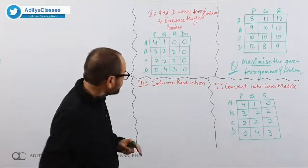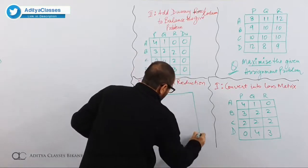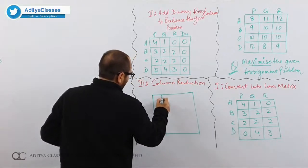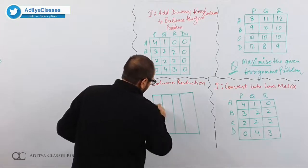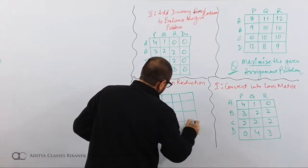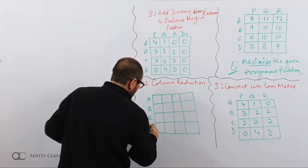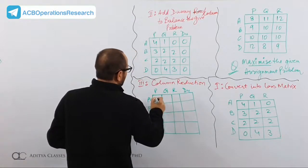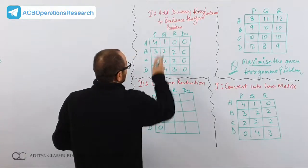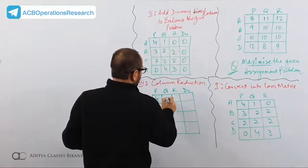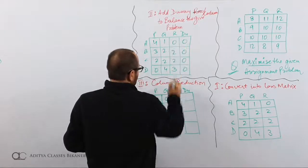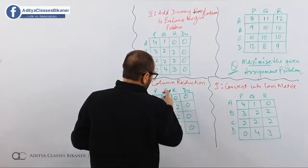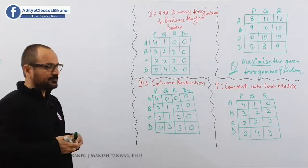In column reduction, we select the minimum in each column and subtract it from all other values. It looks like we are headed for another degenerate solution. For columns P, Q, R and dummy: the first column already has a 0; the second column has a minimum of 1, so after subtracting we get 0, 1, 1, 3 — wait, the values become 0, 1, 1, 3 then 0, 2, 2, 3 then 0. Only that one column gets touched; everything else remains the same.